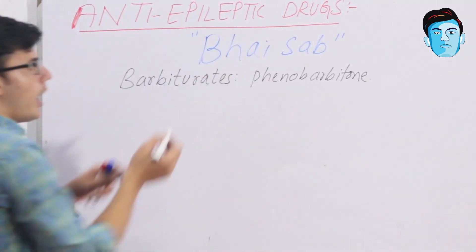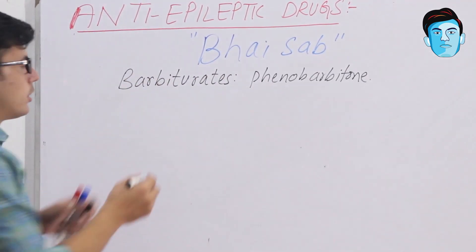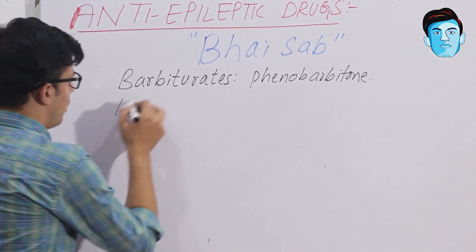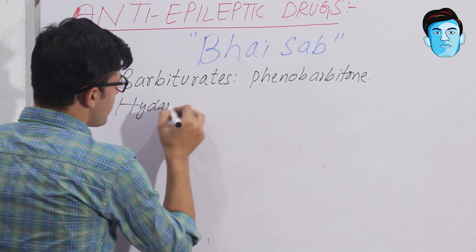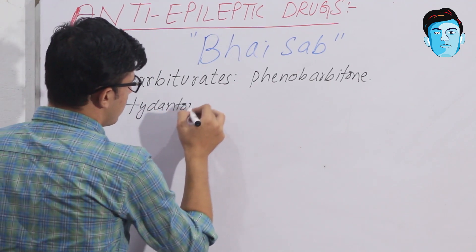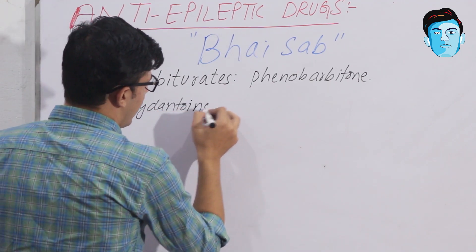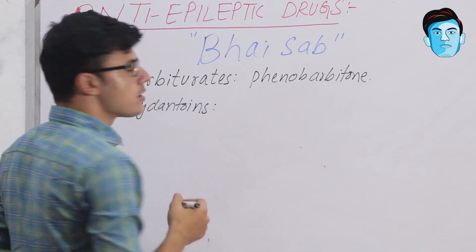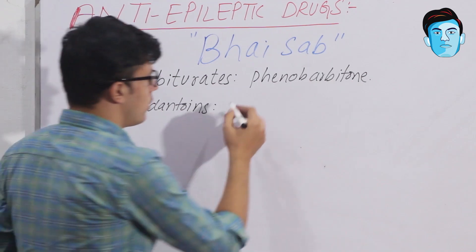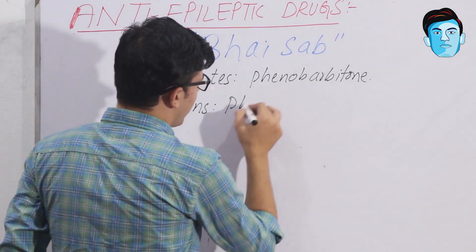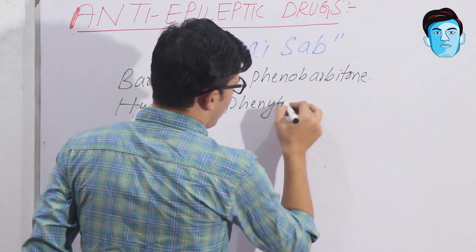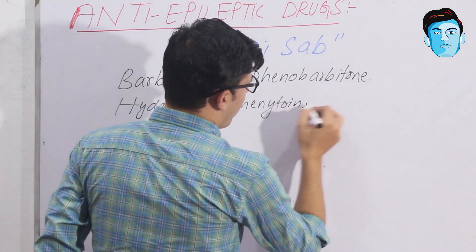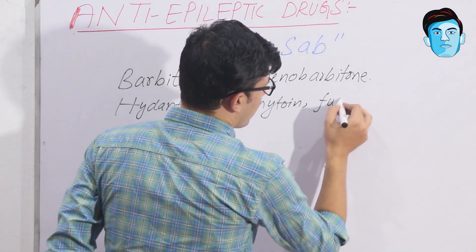H stands for the hydantoins, and in this class we have phenytoin and fosphenytoin.